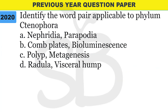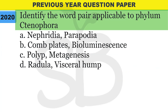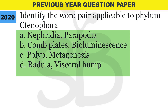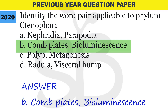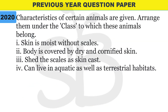Next question from the 2020 annual exam: identify the word pair applicable to phylum Ctenophora. The correct answer is Option B - bioluminescence and comb plates.